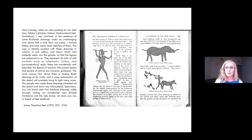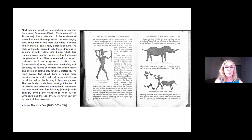Next morning, whilst we were packing for our start from Motoko's, I was informed of the existence of some bushman drawings on an overhanging rock about half a mile from our camp. I hurried thither and took some hasty sketches of them. The rock is literally covered with these drawings in colours of red, yellow, and black, which had evidently eaten into the granite so that the figures are preserved to us. They represent all sorts of wild animals such as elephants, kudus, and apes. These are wonderfully well executed. The figures of warriors with poised spears and quivers of arrows are however grotesque. The most curious fact about them is finding these drawings so far north, and a close examination of this district will probably bring to light many more. The people who made these drawings inhabited all this district and down into Minika land. Specimens too are found near Fort Salisbury. Oddly enough, during our wanderings near Zimbabwe and the Saabi, we never saw any or heard of their existence.